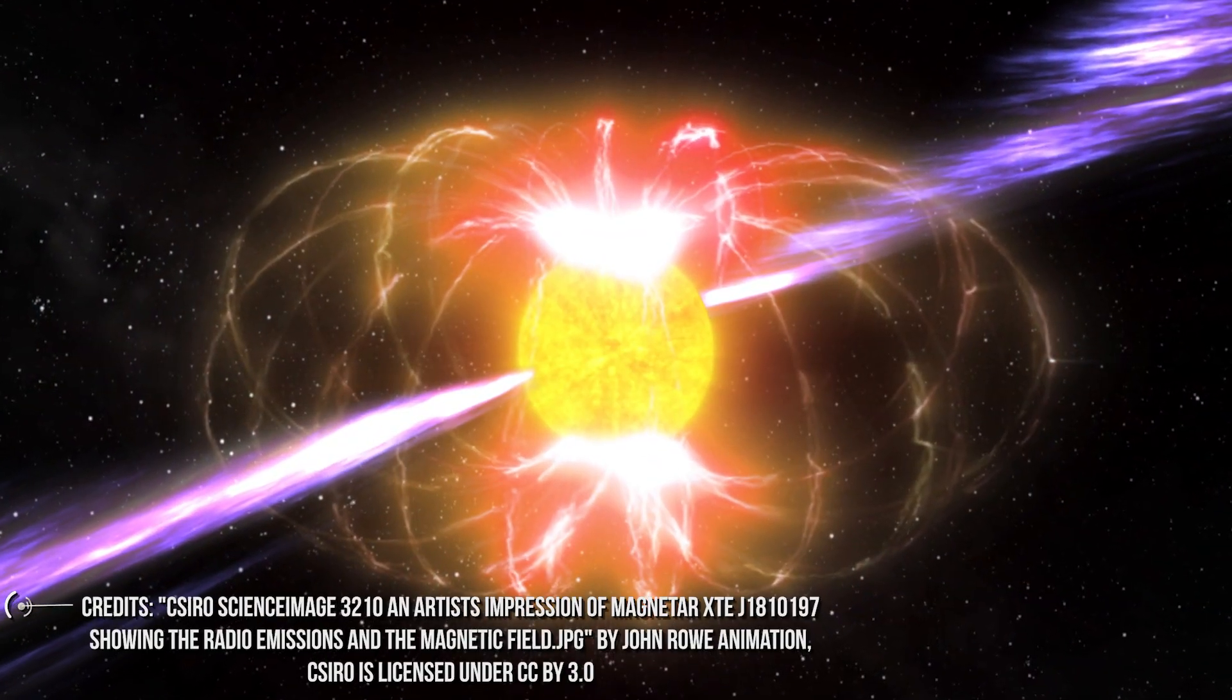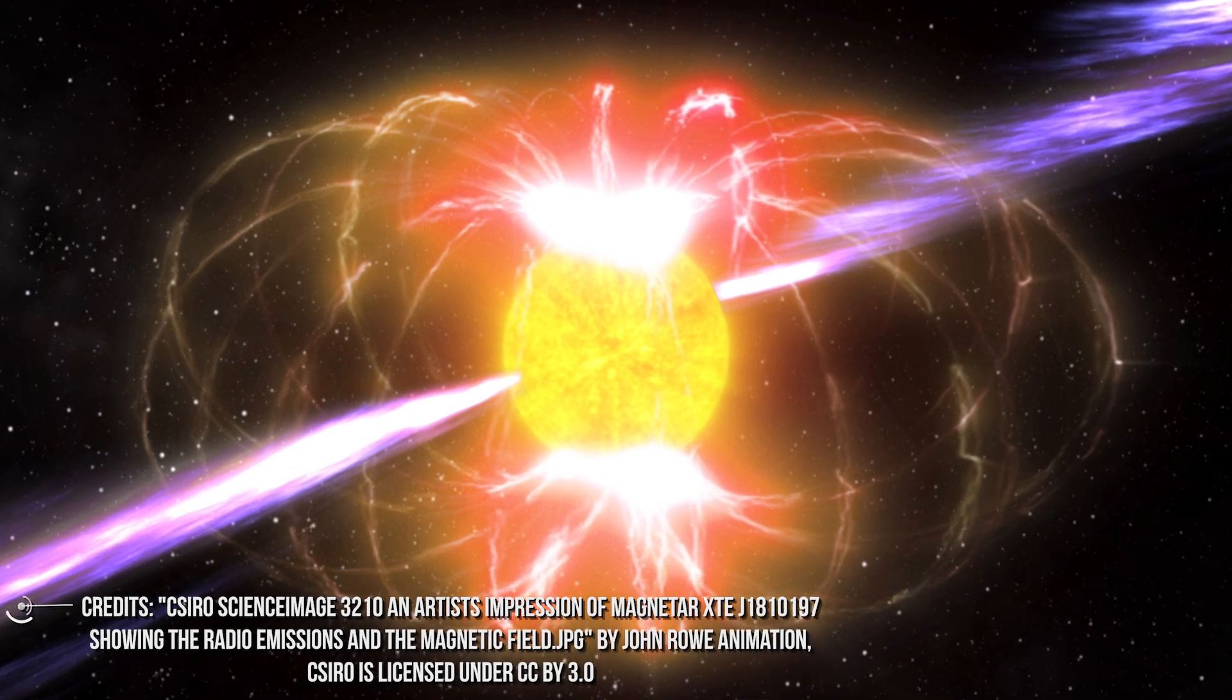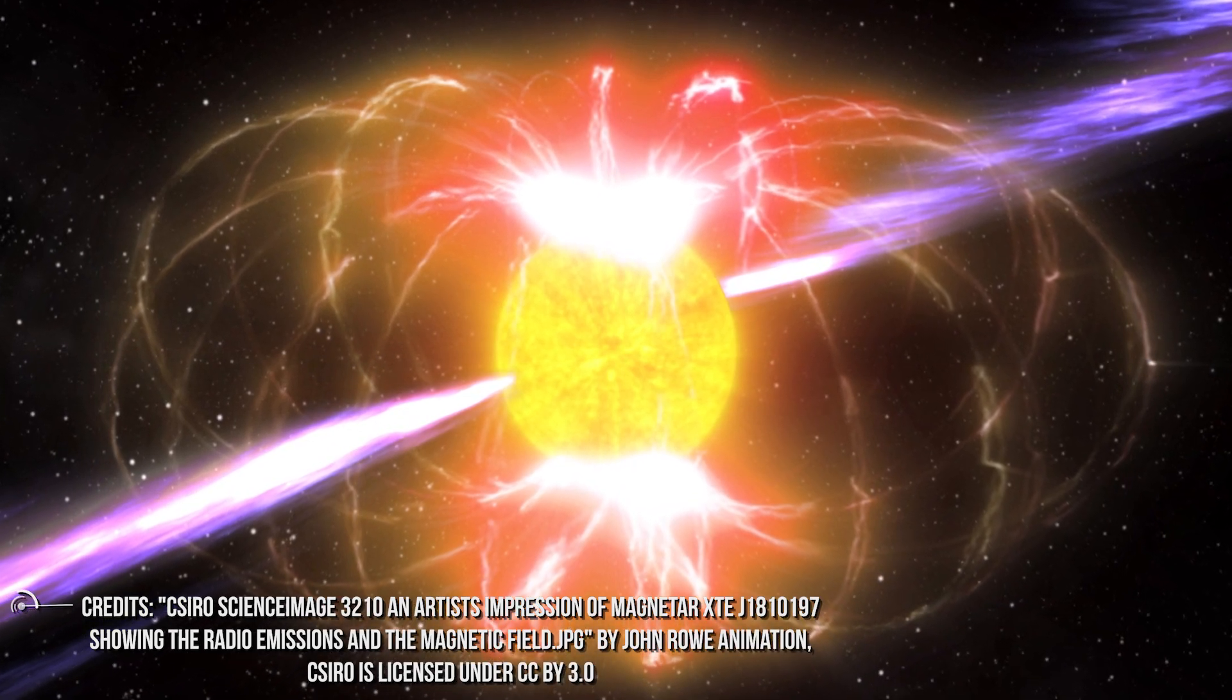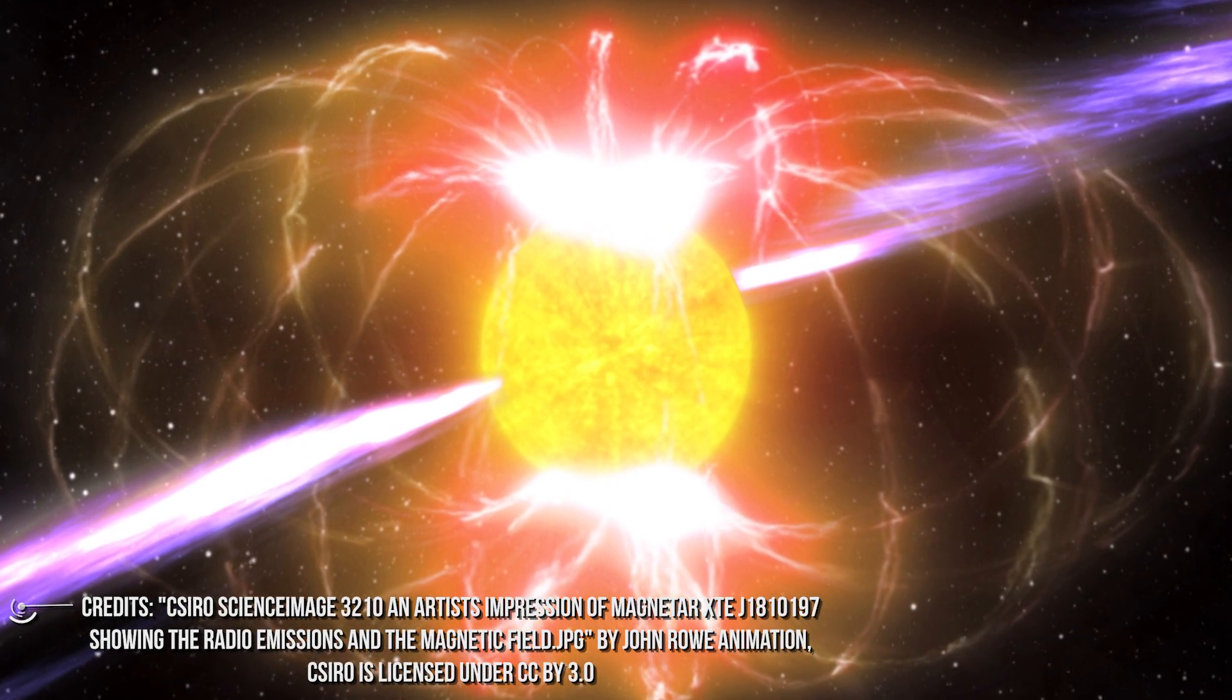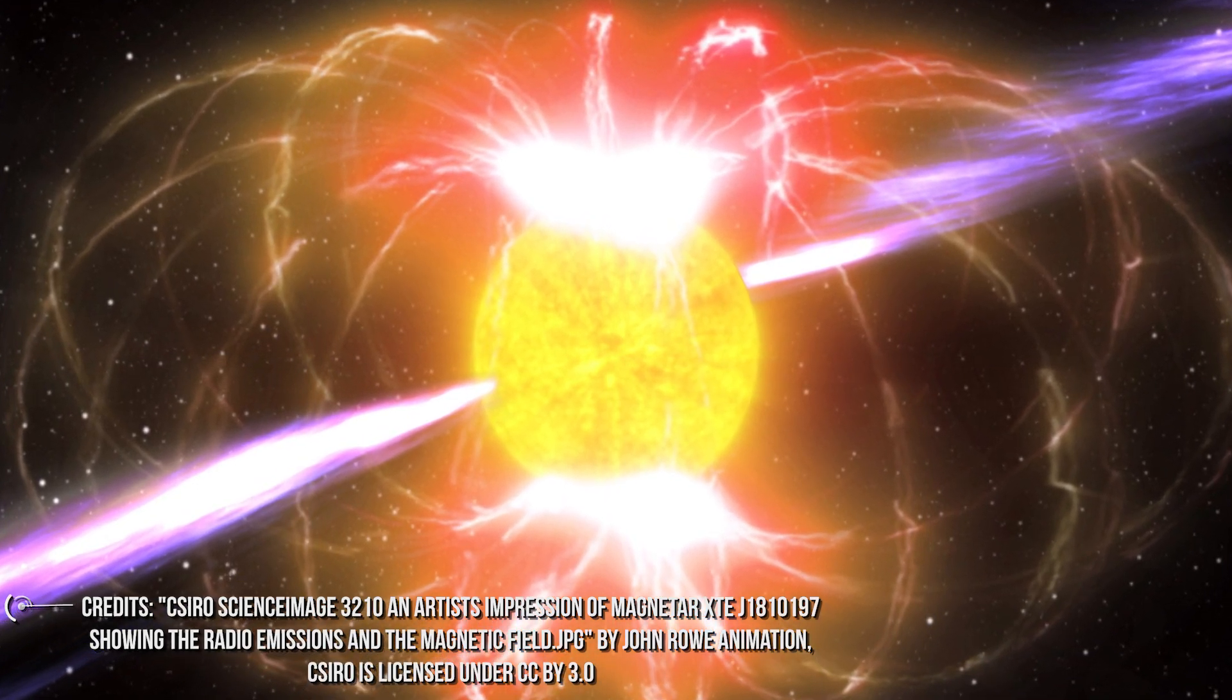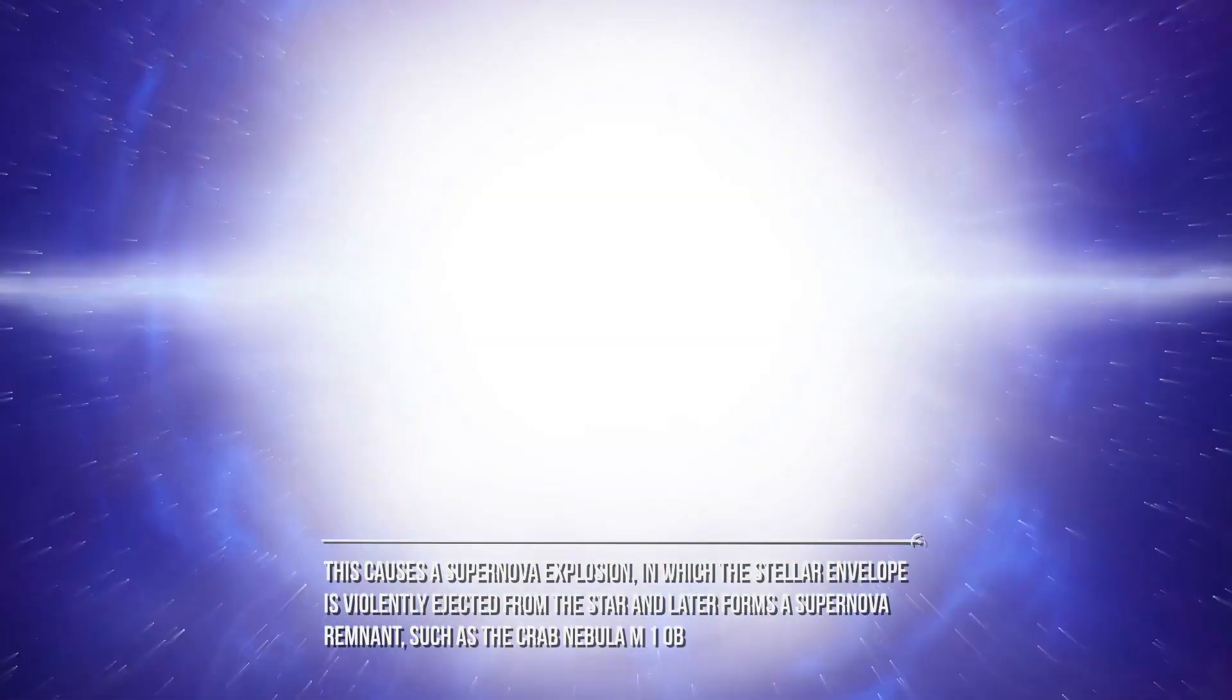The fall of the outer stellar envelope on the core causes its temperature to rise even up to 100 million degrees in a relatively short time, thus triggering an aftermath of thermonuclear reactions in which the explosive burning of carbon and oxygen takes place. This causes a supernova explosion.